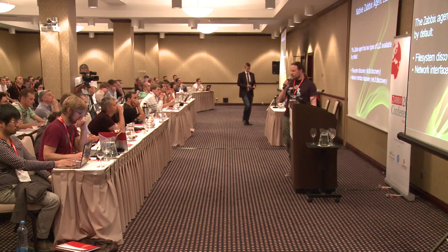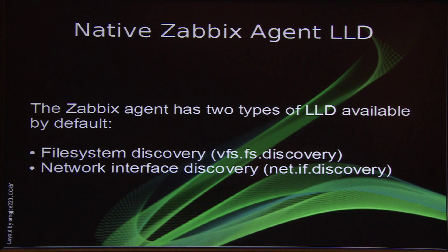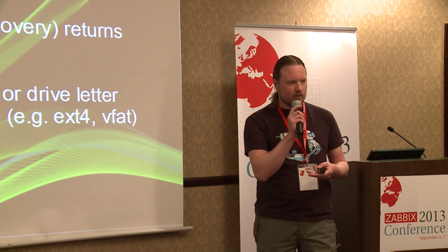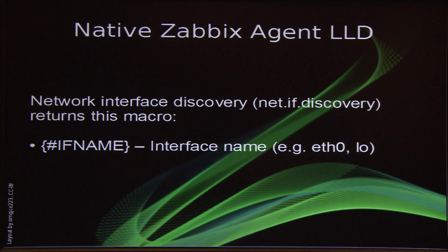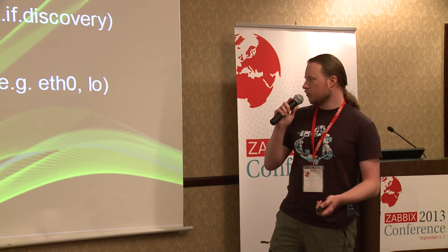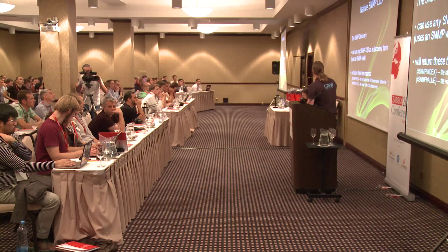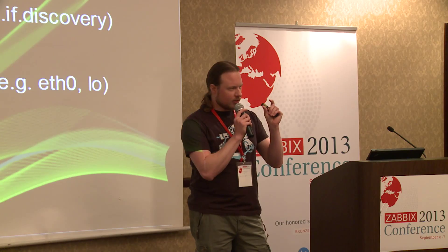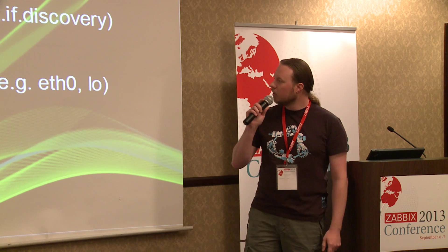By default, the agent has two types of LLD that you can use. One is the file system discovery, and the other does discovery on the available network interfaces. If you do a file system discovery, you get back the file system names and the file system types. And if you want to use the network interface discovery, it will give you back the macro that contains the name of the interface, which you can then use to create items for eth0, local interfaces, or whatever.